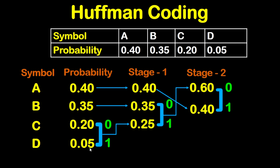Now we will take the least two numbers in the probability, which is 0.20 and 0.05, and we will put 0 at the top number and 1 at the bottom number. We will add these two numbers: 0.20 plus 0.05, which gives 0.25. For the other two numbers 0.4 and 0.35, we will keep them as is.